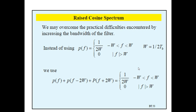To overcome the difficulties encountered with the ideal Nyquist channel, we extend the bandwidth from the ideal Nyquist minimum value W = RB/2 to an adjustable value between W and 2W. So we extend our bandwidth from the minimum value W to an adjustable value between W and 2W, in order to specify a function that elaborates on the ideal Nyquist channel.